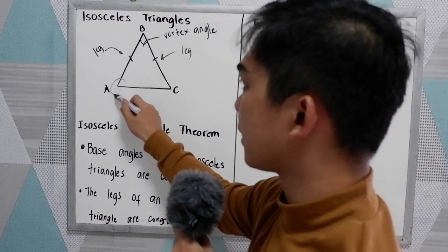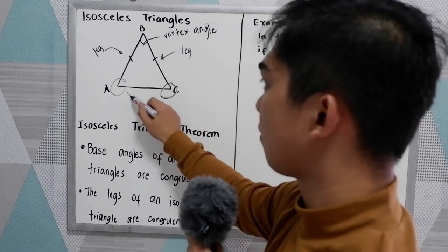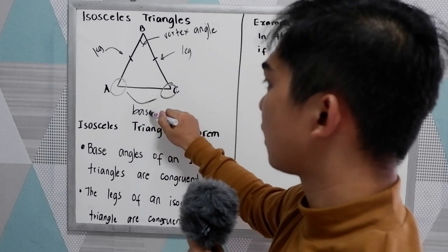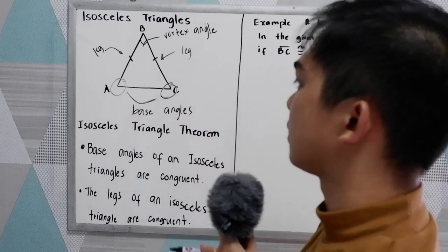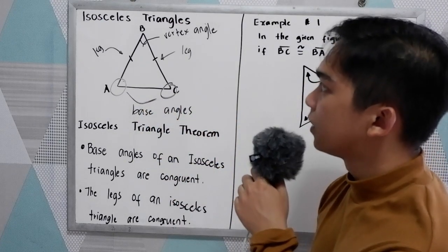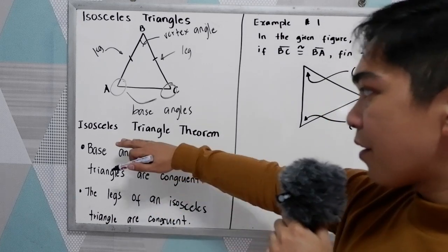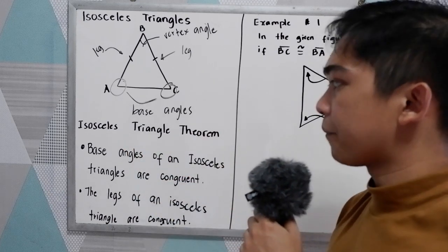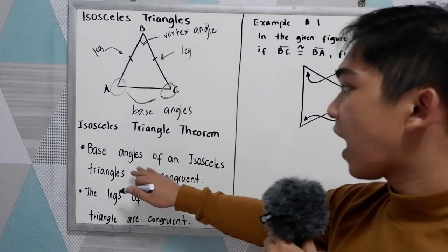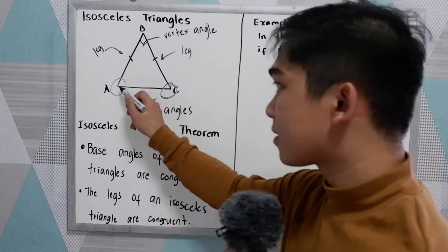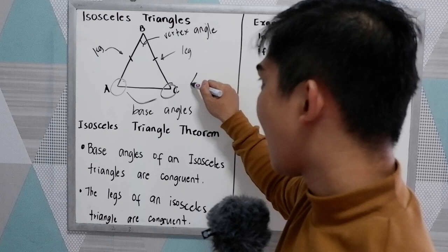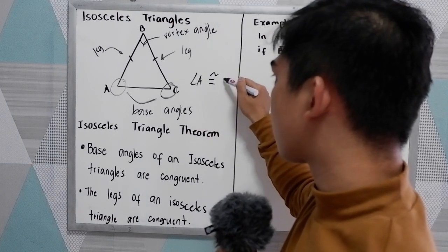And the two here are the base angles. The two angles is our base angles. So we also have the isosceles triangle theorem. Our theorem, base angles of an isosceles triangles are congruent. That means in our given figure, angle A is congruent to angle C.